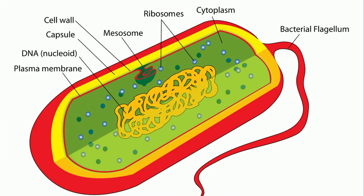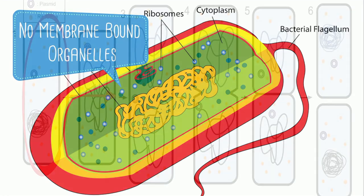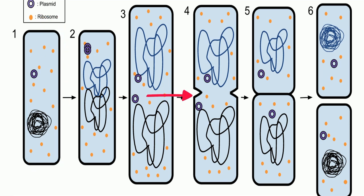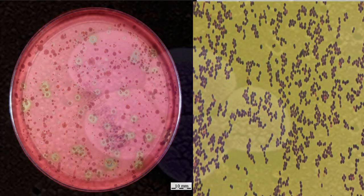A bacteria cell is a prokaryotic cell, which means it does not have a nucleus or membrane bound organelles. Bacteria are made up of a single cell and reproduce by fission or by forming spores. Many times you will see bacteria cells in colonies.